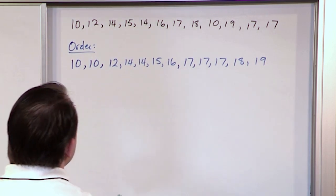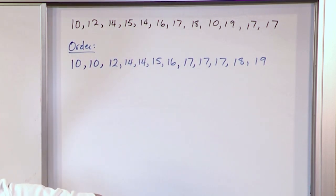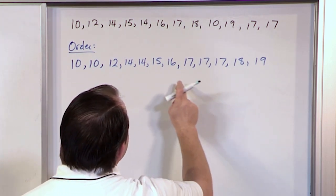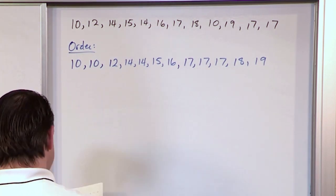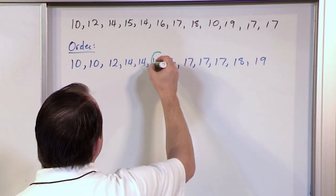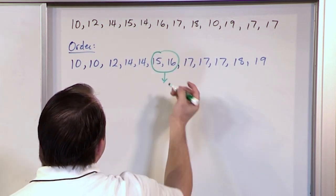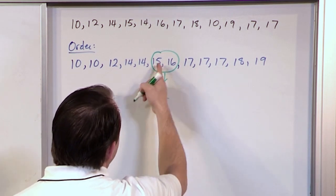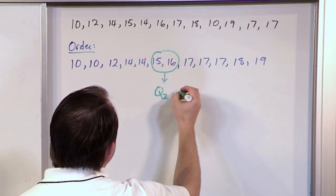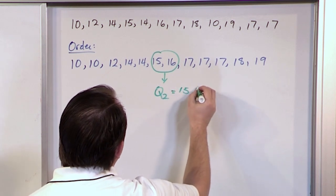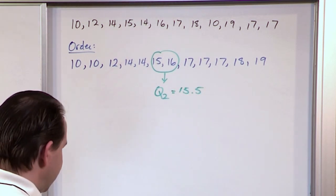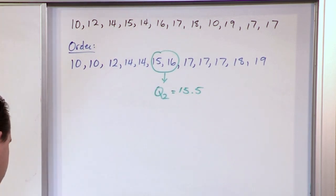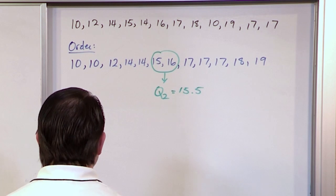What I want to do is look and find the middle value, which is going to be Q2 or the median here. Since I have 12 values, there's not going to be any single value in the middle. So really the two middle values are 15 and 16. The average here — 15 plus 16 divided by 2 — you're going to get 15.5. So that is basically the median of this data set. You average the middle two values and get 15.5.